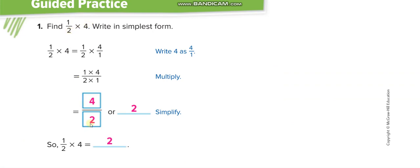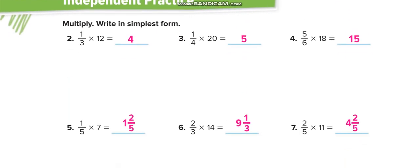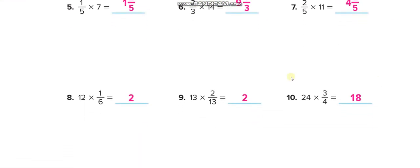Okay, similarly here, 4 times 1 is 4 over 2. 4 over 2. 4 divided by 2 is 2. Similarly here, solve all these questions by yourself first. This is the simplified answer. 12 times 1 is 12 over 3. So 12 divided by 3 equals 4. 20 divided by 4 equals 5. 18 times 5, that is 90, and then 90 divided by 6 is 15.